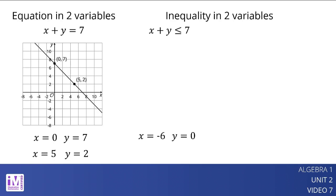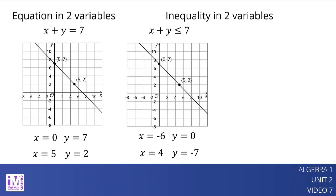Two possible solutions are the pairs x equals negative 6 and y equals 0, and x equals 4 and y equals negative 7. On a coordinate plane, the solution to x plus y is less than or equal to 7 includes the line that represents x plus y equals 7.